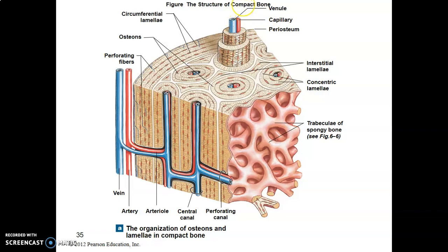Osteoclasts also regulate blood calcium levels. When calcium is low in blood, osteoclasts will break down bone and release calcium into the blood. Regarding the histology of compact bone, the extracellular matrix consists of collagen fibers and ground substance.